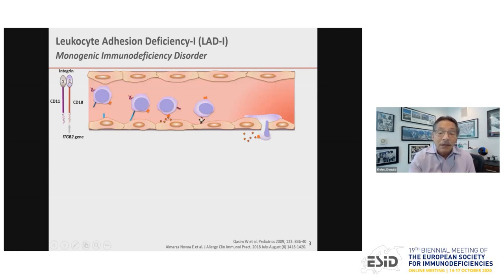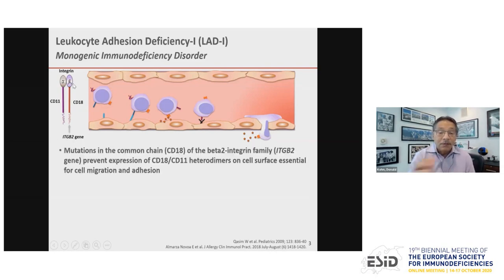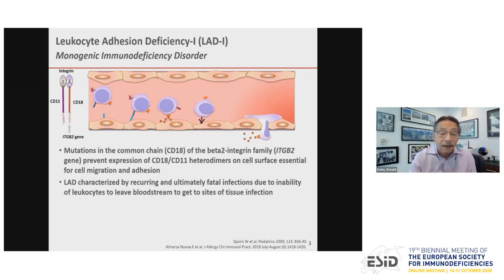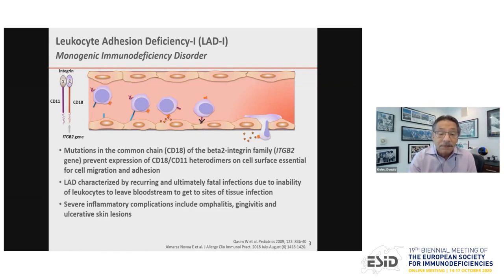LAD is characterized by recurring and ultimately fatal infections due to the inability of leukocytes to leave the bloodstream to reach sites of tissue infection. Patients also have severe inflammatory complications including omphalitis, gingivitis, and ulcerative skin lesions. The only curative treatment currently is allogeneic hematopoietic stem cell transplant, which may be limited by availability of suitable donors and risks of graft-versus-host disease. LAD can be classified as severe with less than 2% CD18 expression or moderate with 20 to 30% expression. The prognosis is quite bad for severe patients — 60 to 75% die prior to age 2, and even those with moderate LAD, 50% die before age 40.